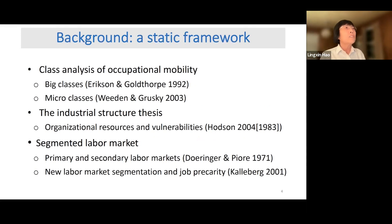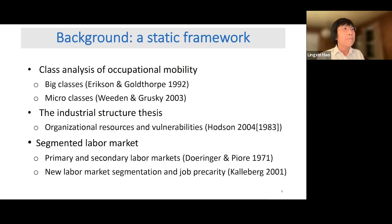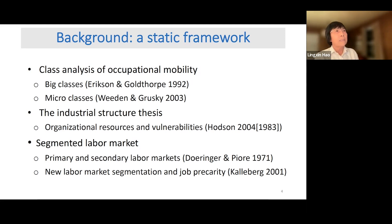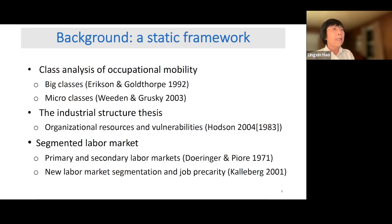I summarize the literature in two frameworks. The first is a cross-static framework, including the class analysis of occupational mobility with big classes and micro classes, the industrial structure thesis emphasizing occupational resources and vulnerabilities, the internal labor market, and the segmented labor market with its two ideal types — the primary labor market and secondary sector — as well as newer work on labor market segmentation and job precarity.